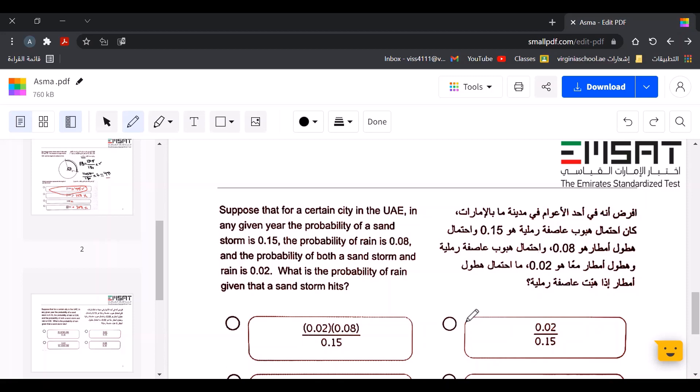and the probability of both a sandstorm and rain is 0.02. What is the probability of rain given that a sandstorm hits?